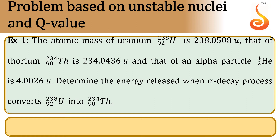When alpha decay takes place, uranium-92-238 converts into thorium. It becomes a smaller element by emitting an alpha particle, giving thorium-90-234 plus a helium-2-4 alpha particle, plus some amount of energy released.